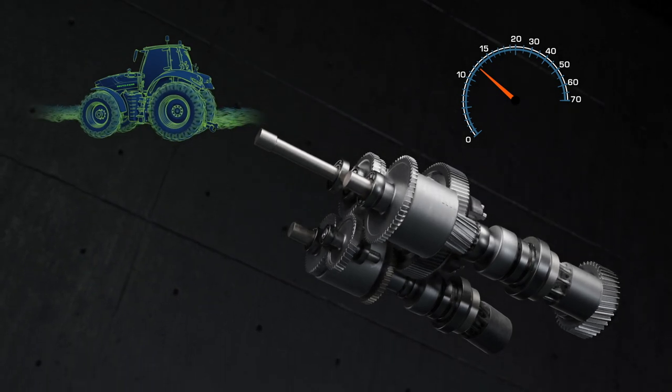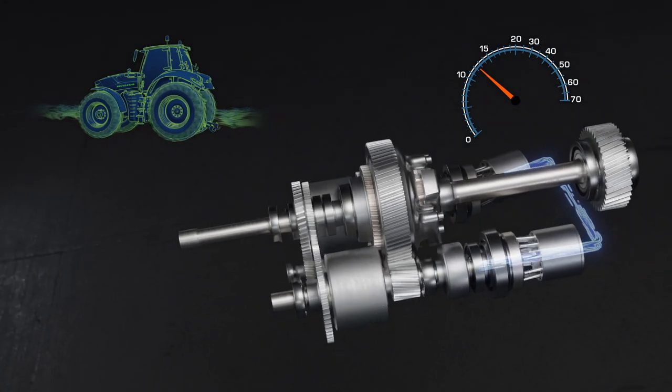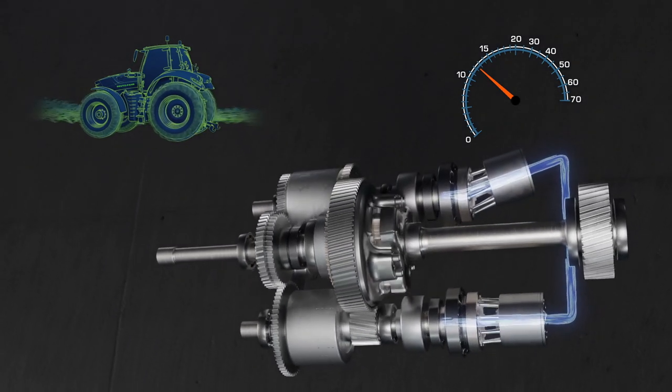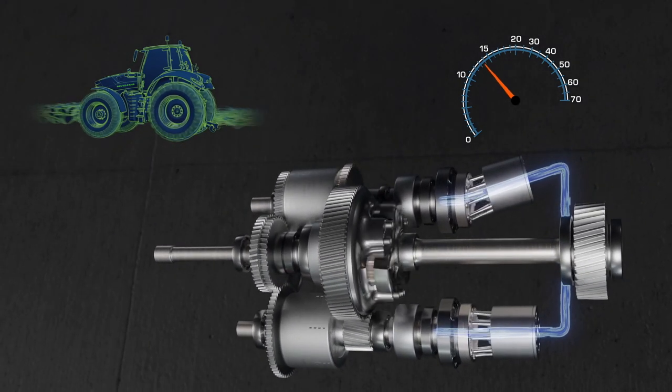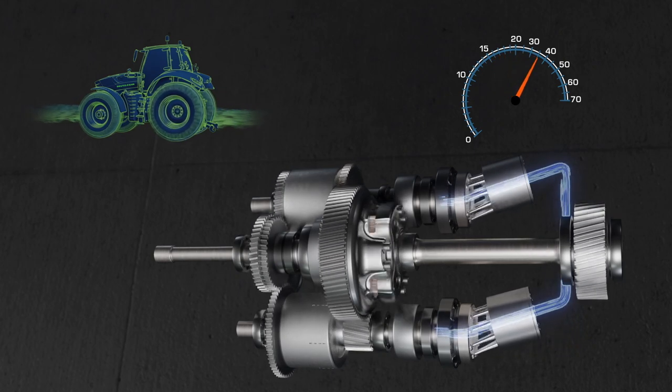In the second range, the entire power flow in the transmission changes. The tasks of the hydraulic units are exchanged. The hydraulic motor now works as a hydraulic pump, and the hydraulic pump now works as a hydraulic motor.